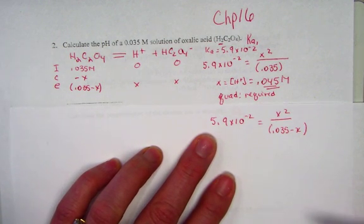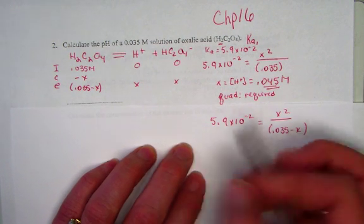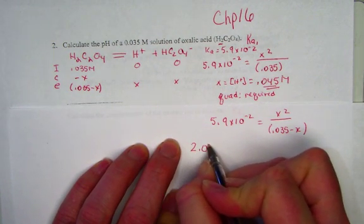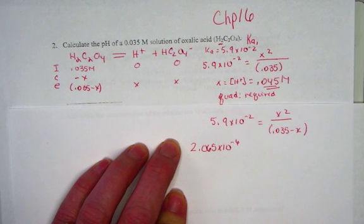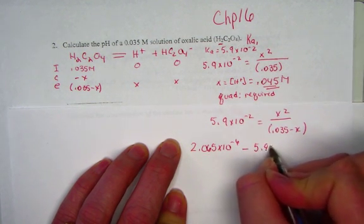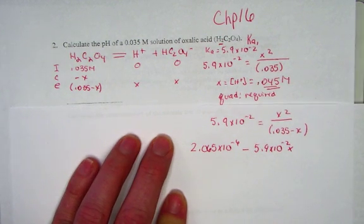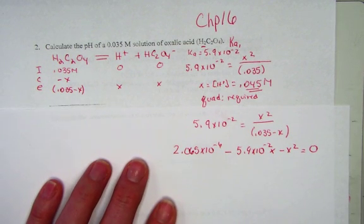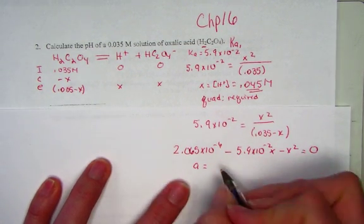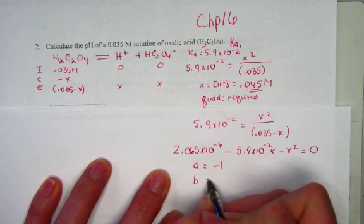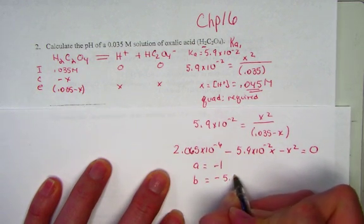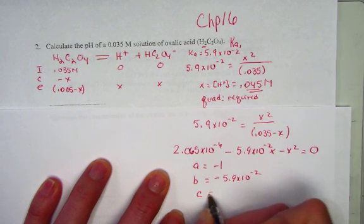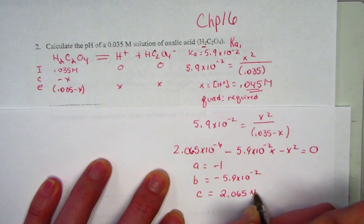So 5.9 times 10 to the negative 2 set equal to X squared over 0.035 minus X, taking into consideration the quadratic equation. We'll simplify that equation putting it into the quadratic formula. A would have a value of negative 1, B has a value of negative 5.9 times 10 to the negative 2, and C has a value of 2.065 times 10 to the negative 6.